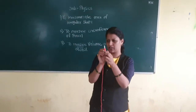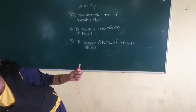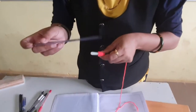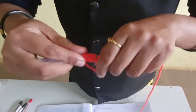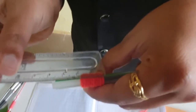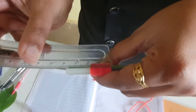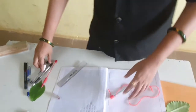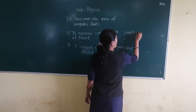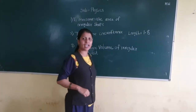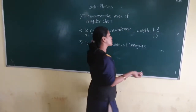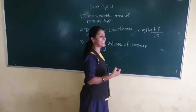Now you have to measure this thread with the help of a scale. The length is coming to approximately 1.8 centimeters. We have taken 10 turns, so you divide 1.8 by 10.